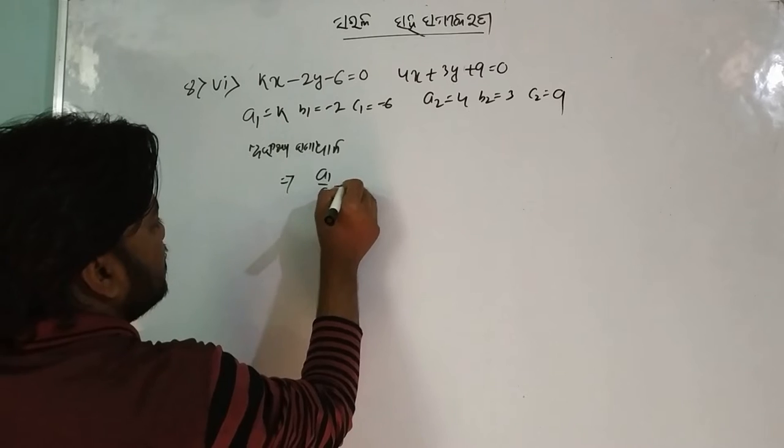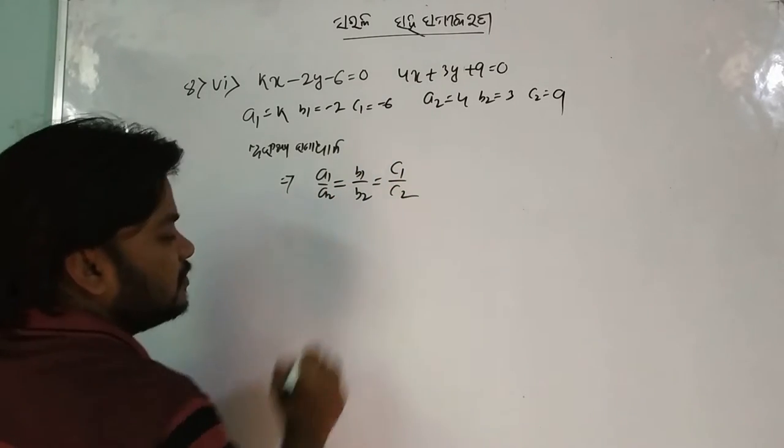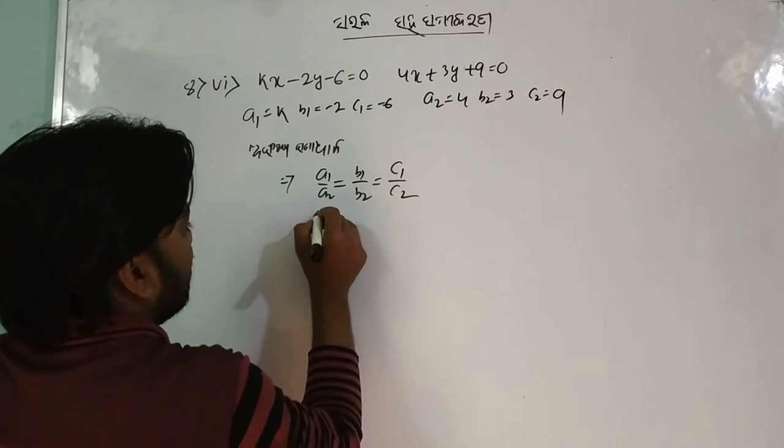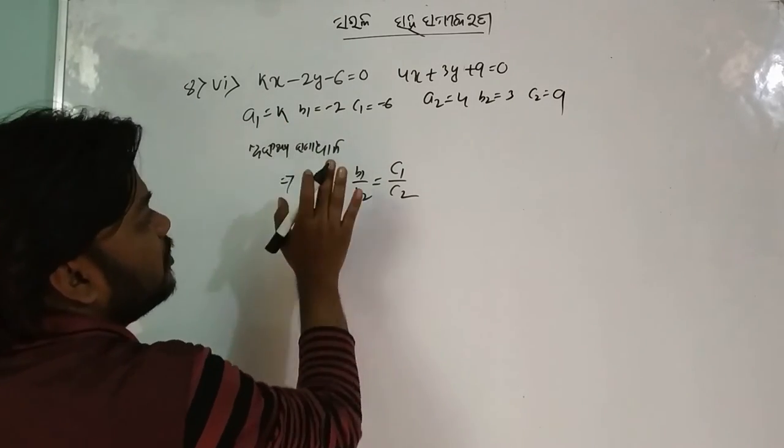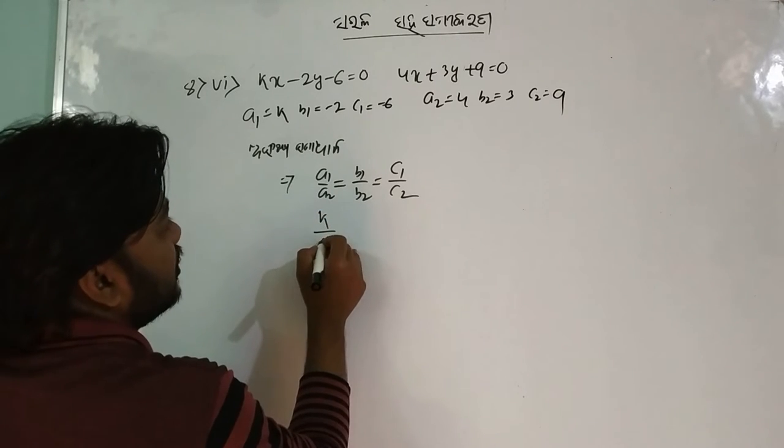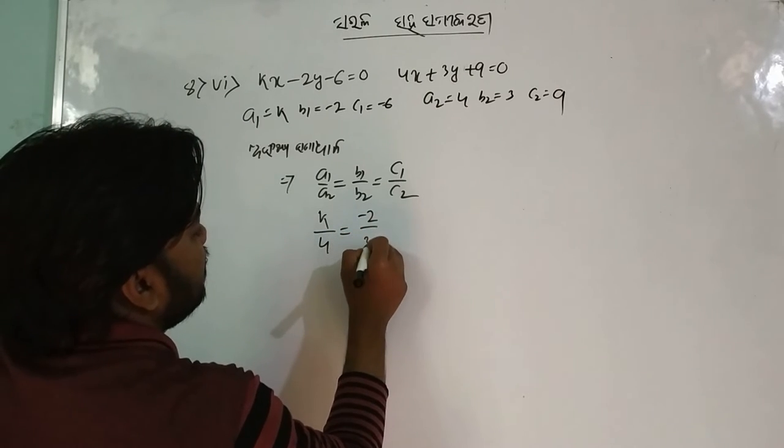A1 by a2 is equal to b1 by b2 is equal to c1 by c2. Then a1 is equal to K. If you want to write a1 then we will write a1 by a2, K by a2 is equal to b1 minus 2 by 3.